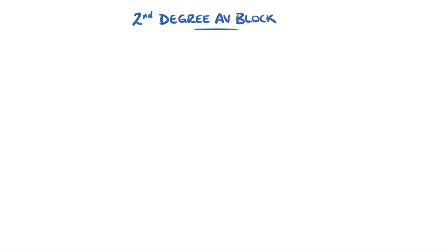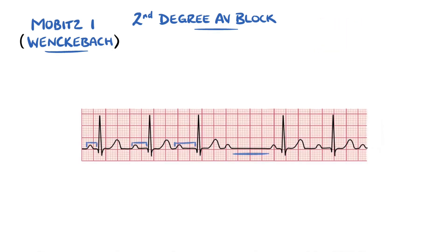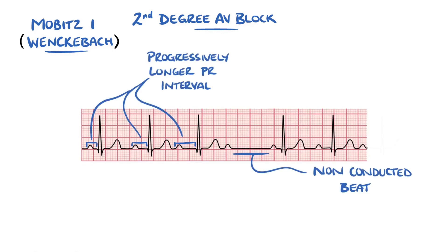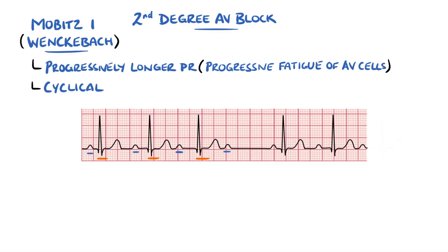Second degree AV block has two types: Mobitz I, also known as Wenckebach, or Mobitz II, known as Hay block. Mobitz I features a progressively lengthening PR interval, followed by a non-conducted ventricular beat, due to progressive fatigue of AV nodal cells. Mobitz I is cyclical and typically features a ratio of P-waves to QRS complexes per cycle — for example, four to three if there are four P-waves and only three QRS complexes in a cycle.